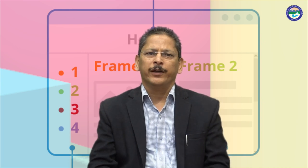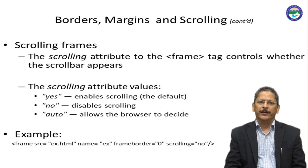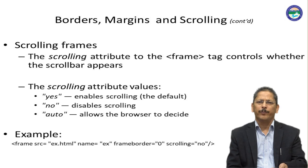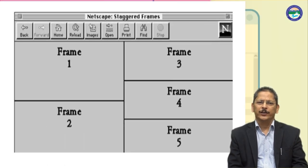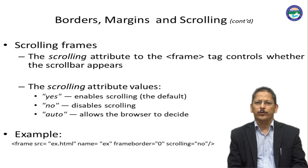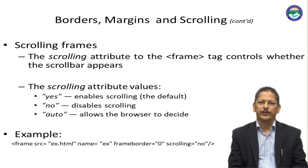We can also mention the scrolling frame attribute — scrolling yes, no, or auto. If we set yes, it will display a scroll bar. If no, it will not display a scroll bar. Auto adds the scroll bar as per requirement. Suppose we have multiple frames and one frame's content is larger than its allocated size — then we require a scroll bar. The scrolling attribute on the frame tag controls whether the scroll bar appears or not. For example: frame src ex.html, name is ex, frame border 0, and scrolling no — meaning no scroll bar will appear.